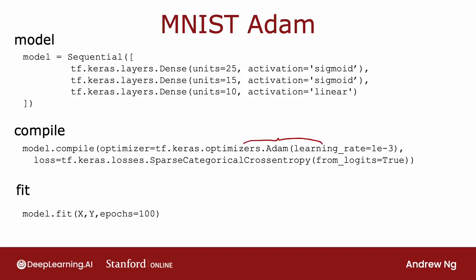So the Adam optimization algorithm does need some default initial learning rate alpha. And in this example, I've set that initial learning rate to be 10 to the negative 3. But when you're using the Adam algorithm in practice, it's worth trying a few values for this initial, this default global learning rate. Try some larger and some smaller values to see what gives you the fastest learning performance.